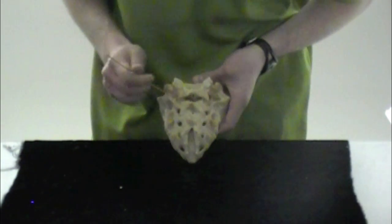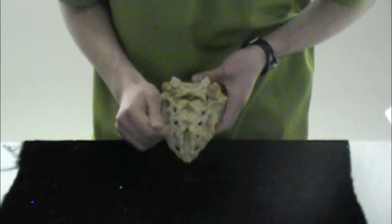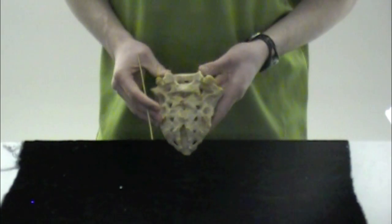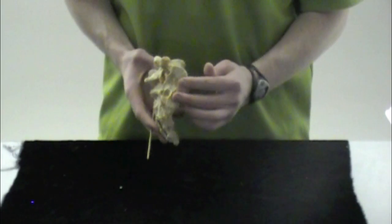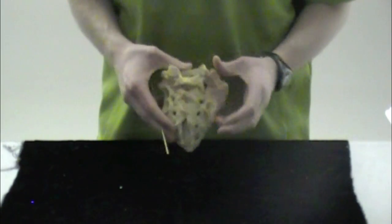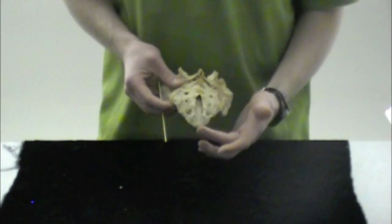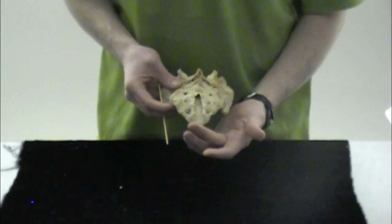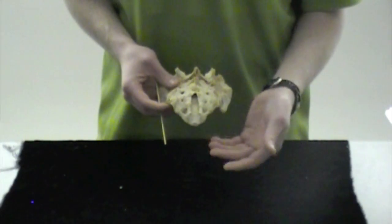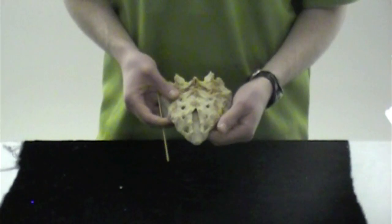Then we have sacral foramen. All these little holes there on the side. Then we're going to have your auricular surface. So it's going to interact with that ileum. And then on the bottom, this one's broken off, so you can't see it so well. But there's a coccyx. And that's just your tailbone. It's four fused vertebrae at the end of the sacrum.